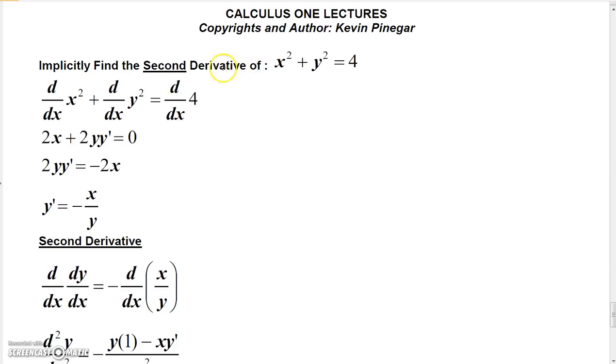I almost forgot, I do have one more application on implicit differentiation. I want to show you how to implicitly find a second derivative. So I'm going to start out with something kind of simple: x squared plus y squared equals 4.